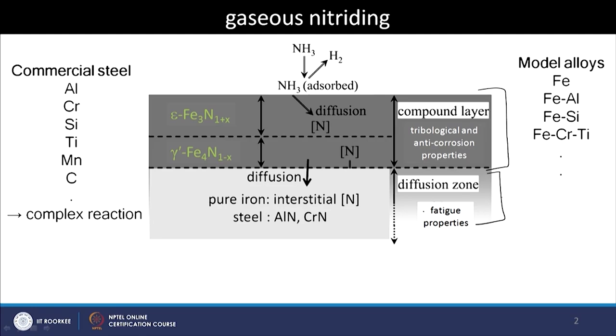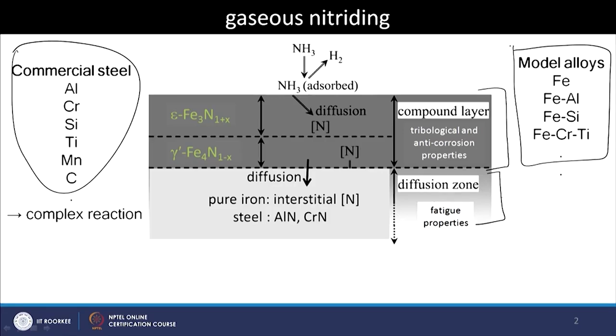We discussed the diffusion zone and what properties can be obtained from it. For a commercial steel, which has several alloying elements added to give bulk properties essential for the component, nitriding becomes a very complicated situation. Nitrogen diffuses inwardly into the sample, and we need to understand how nitrogen interacts with all the elements individually or collectively — that is what leads to the overall nitriding response. Today we will start by understanding what happens during nitriding of relatively simple alloys, beginning with pure iron.